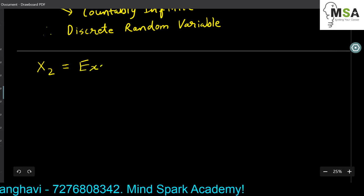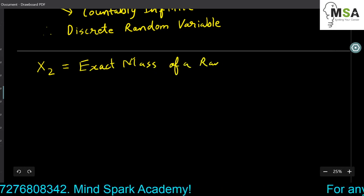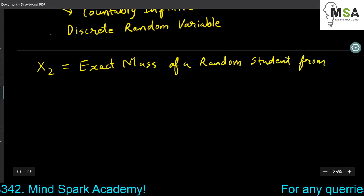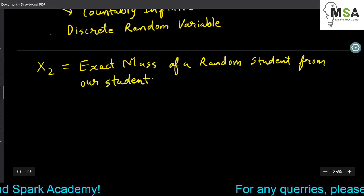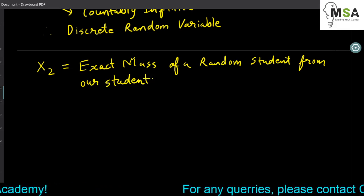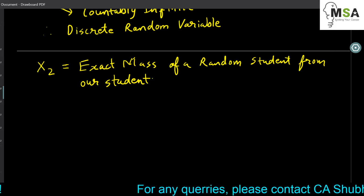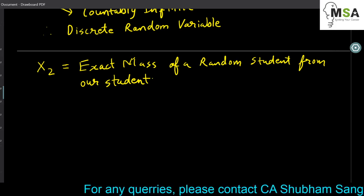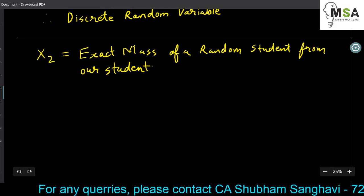Let's take another random variable X2: the exact mass of a random student from a class. When we measure the mass of a student using a measurement machine, that mass is always an approximate mass, because mass is actually the composition of electrons and neutrons. We cannot count the exact number of electrons and neutrons, so the exact mass of a random student can never be counted exactly.